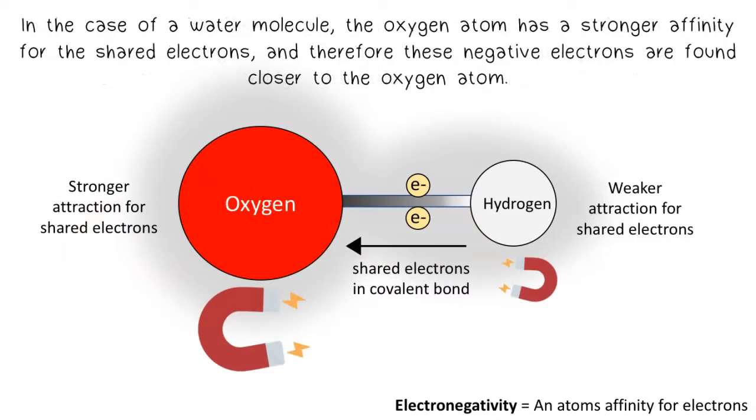In the case of a water molecule, the oxygen atom has a stronger affinity for the shared electrons, and therefore these negative electrons are found closer to the oxygen atom.